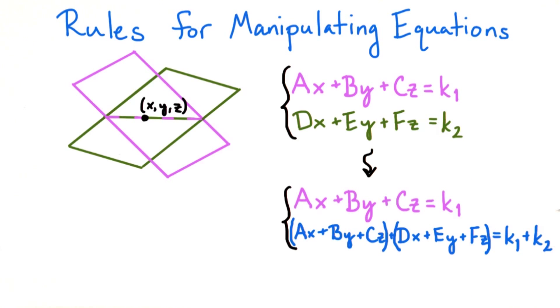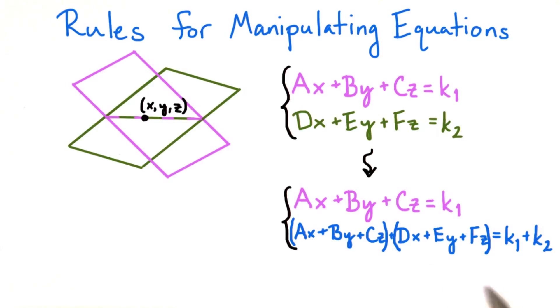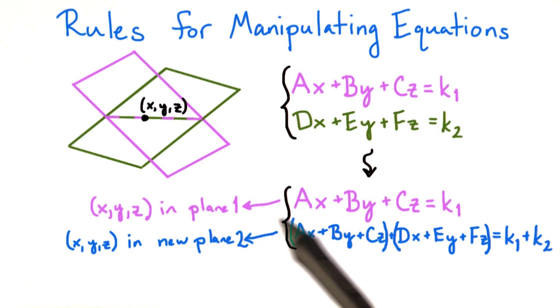Now suppose we added the first equation to the second equation. This equation we know to be true because it was assumed true in the previous system. In the new second equation, this quantity is equal to k1 because of the first equation, and this quantity is equal to k2 because of the second equation from the old system. Therefore, this new system is true as well, x, y, z satisfies both of these equations.